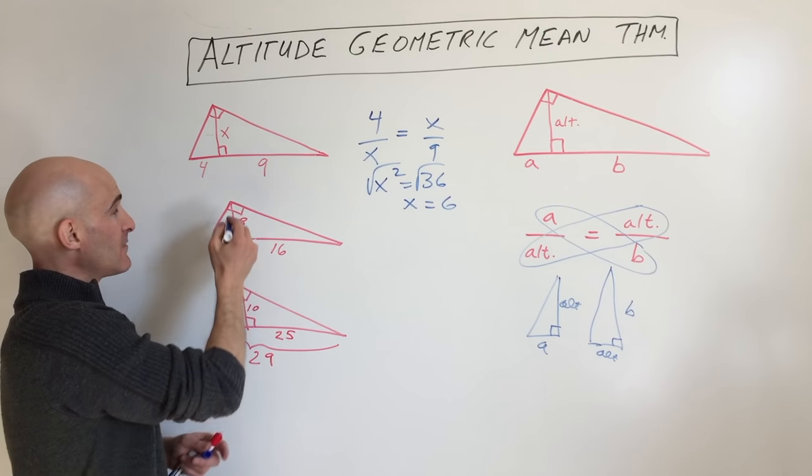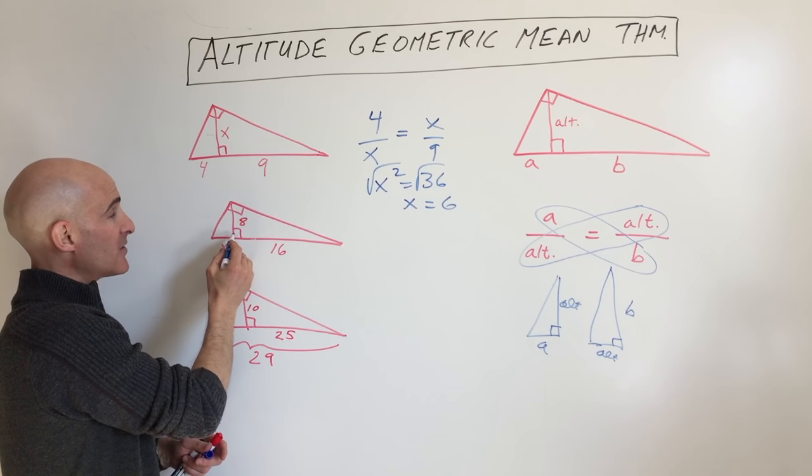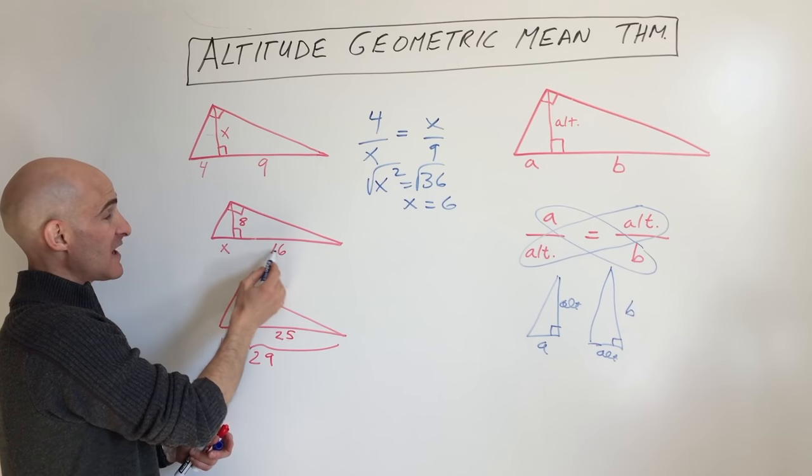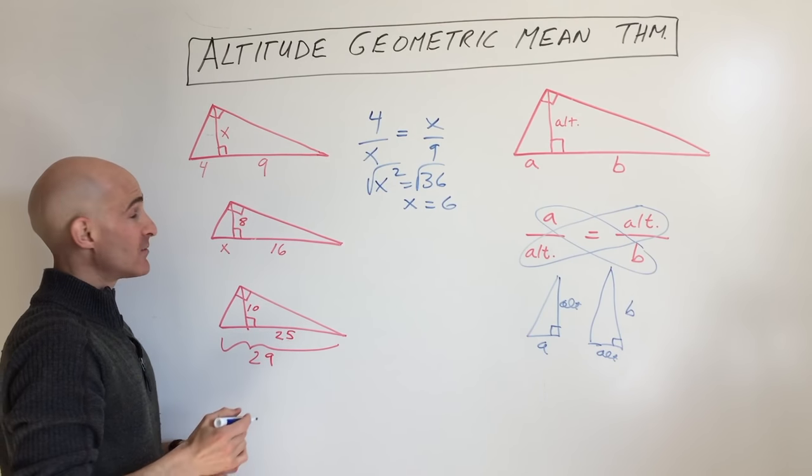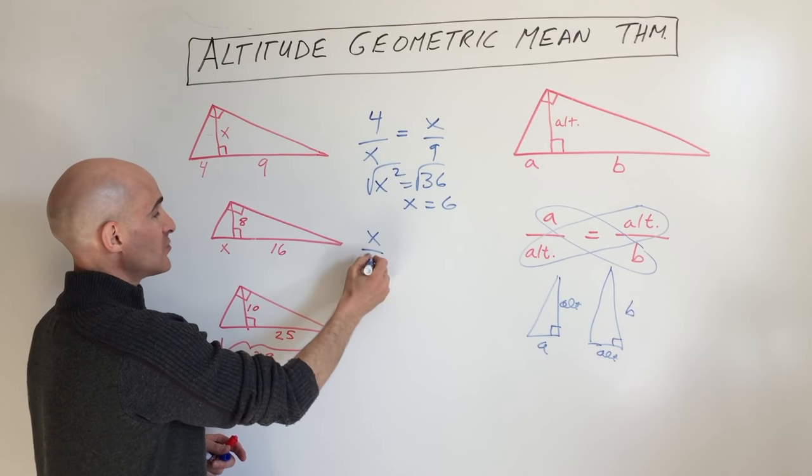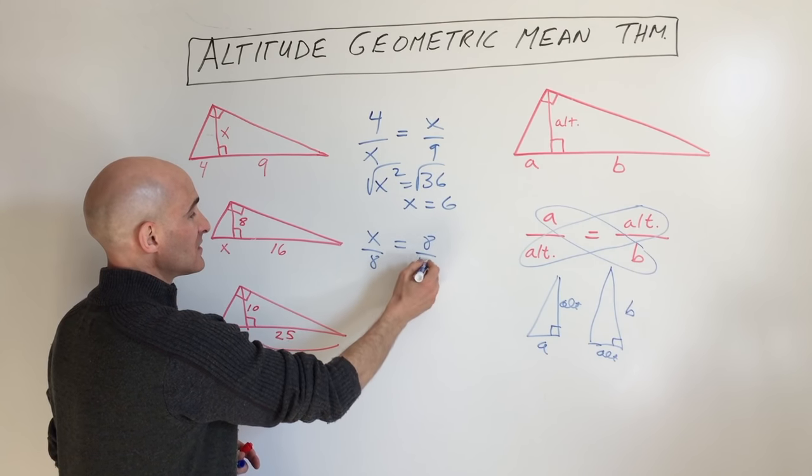This one, same thing. We have a right triangle. We drop an altitude to the hypotenuse, to the base here. This altitude splits the hypotenuse up into two pieces, x and 16. We know that all three of these triangles formed are similar, so we can set up a proportion. Same thing, x is to 8 as 8 is to 16.